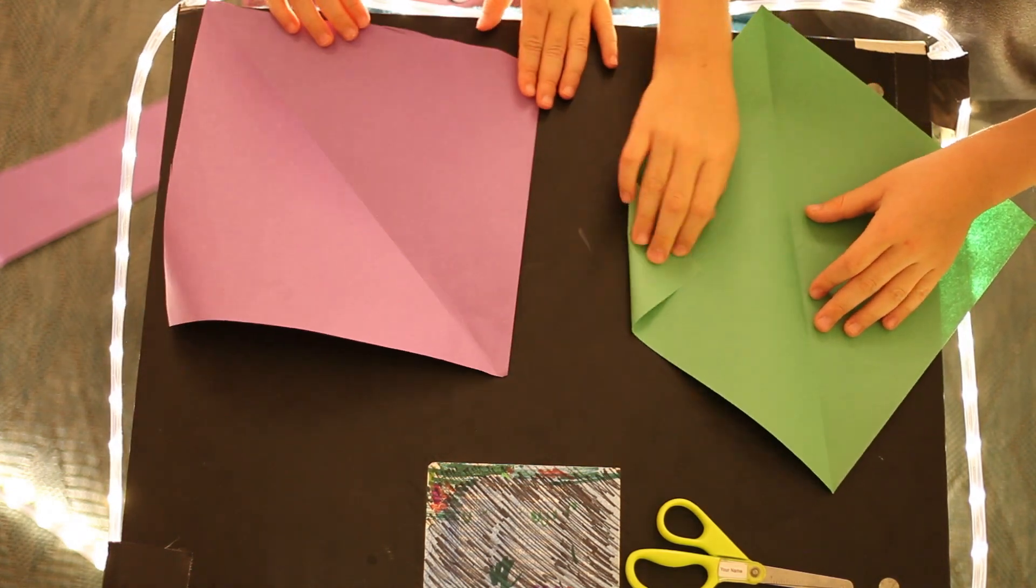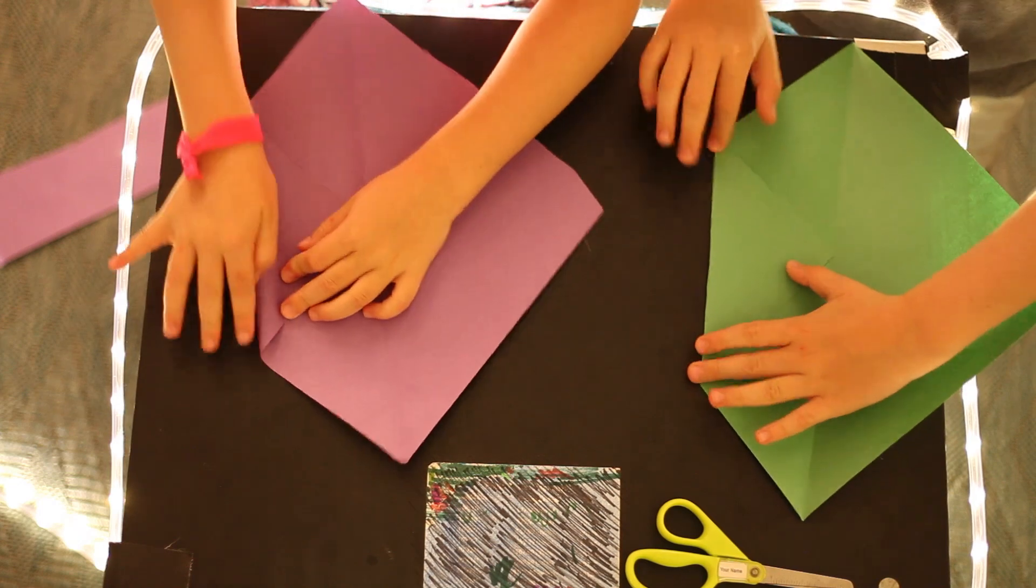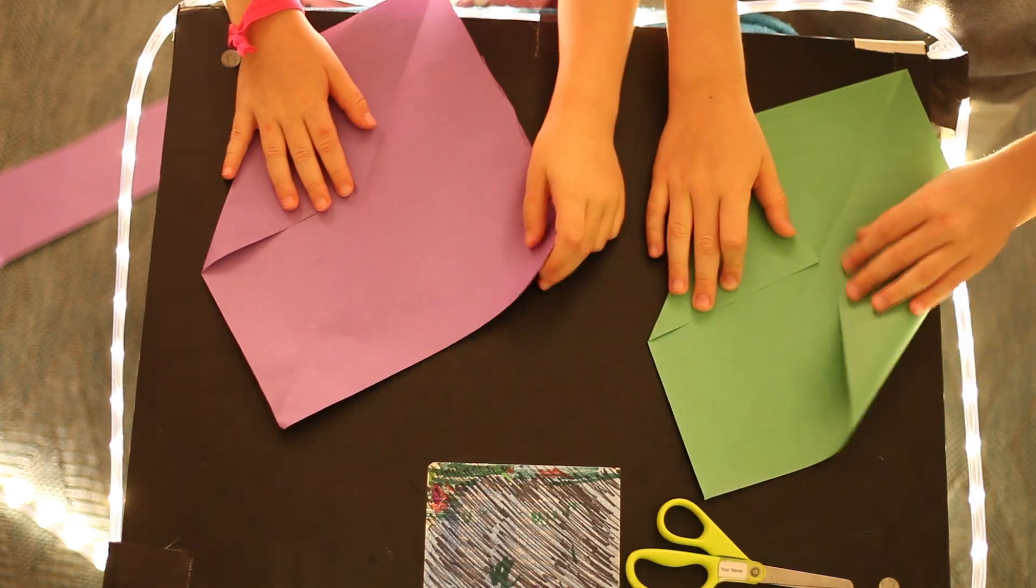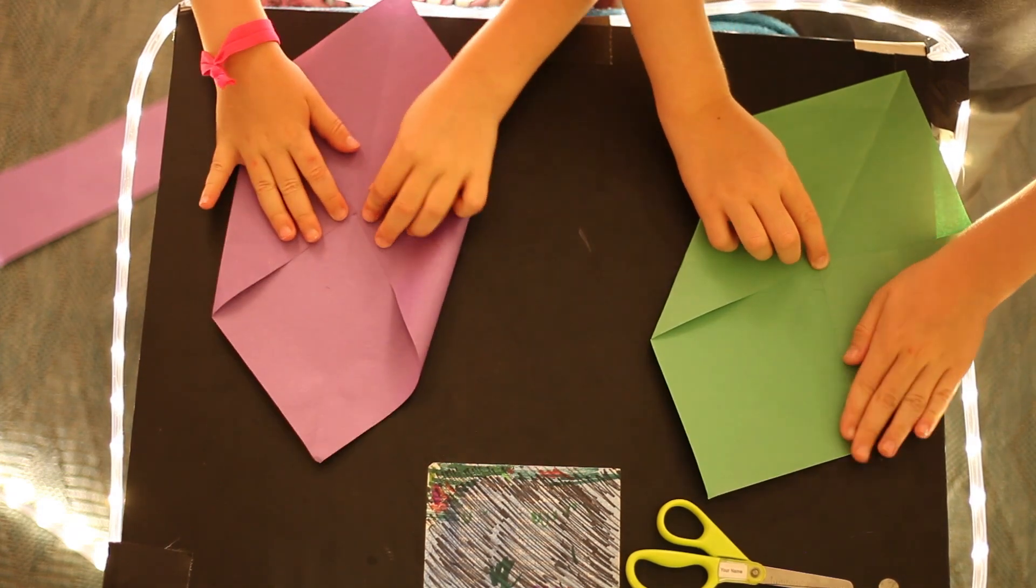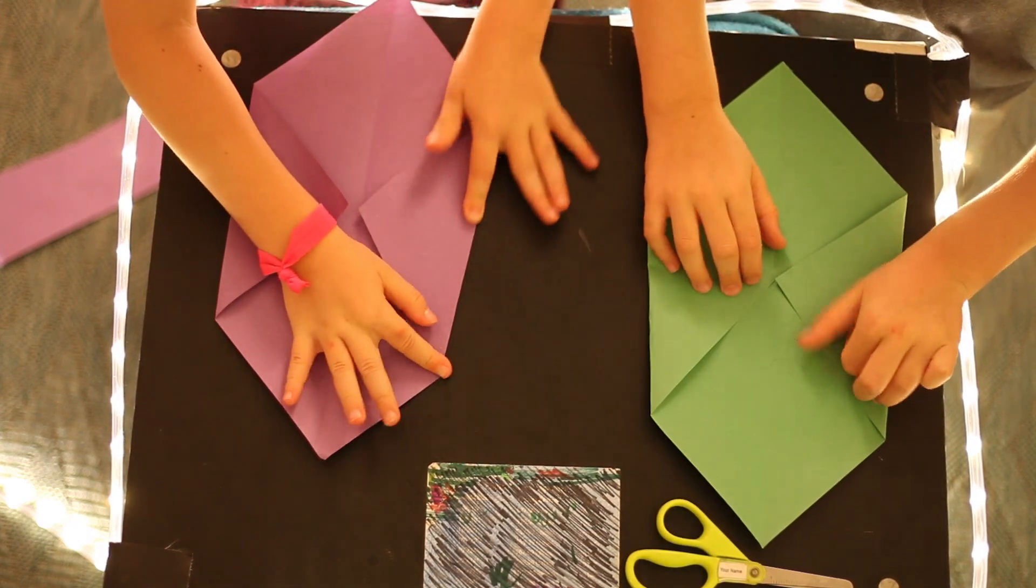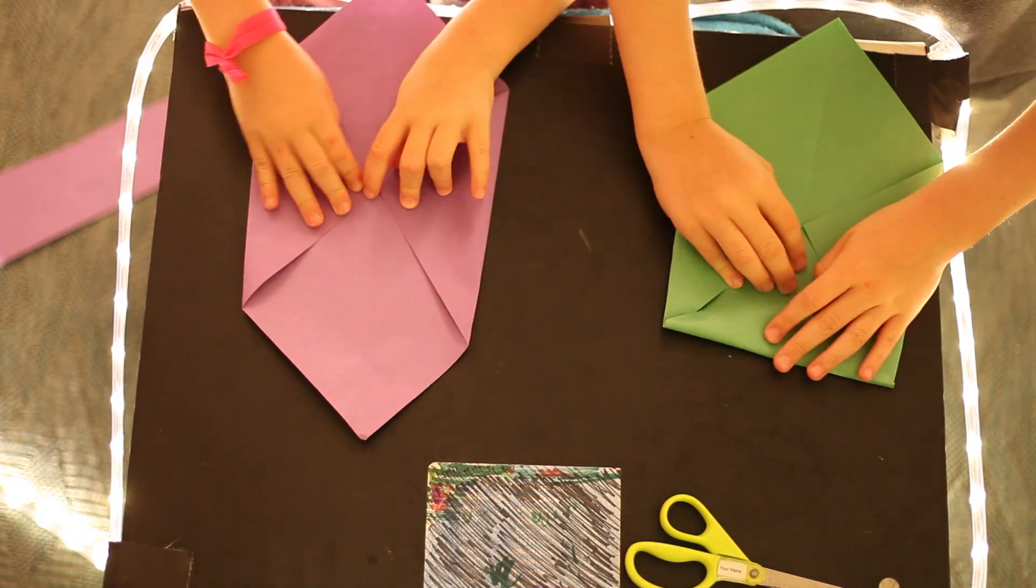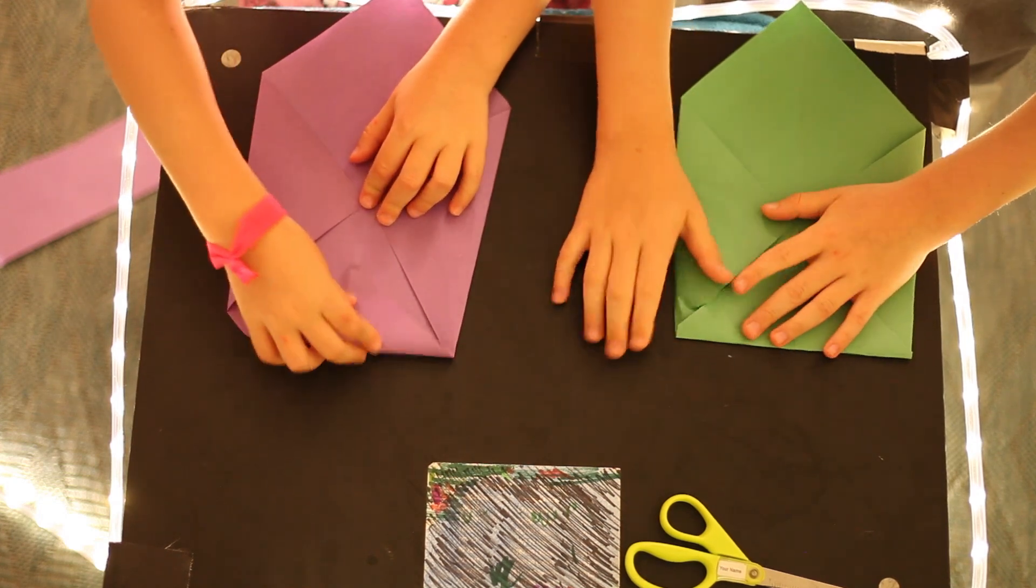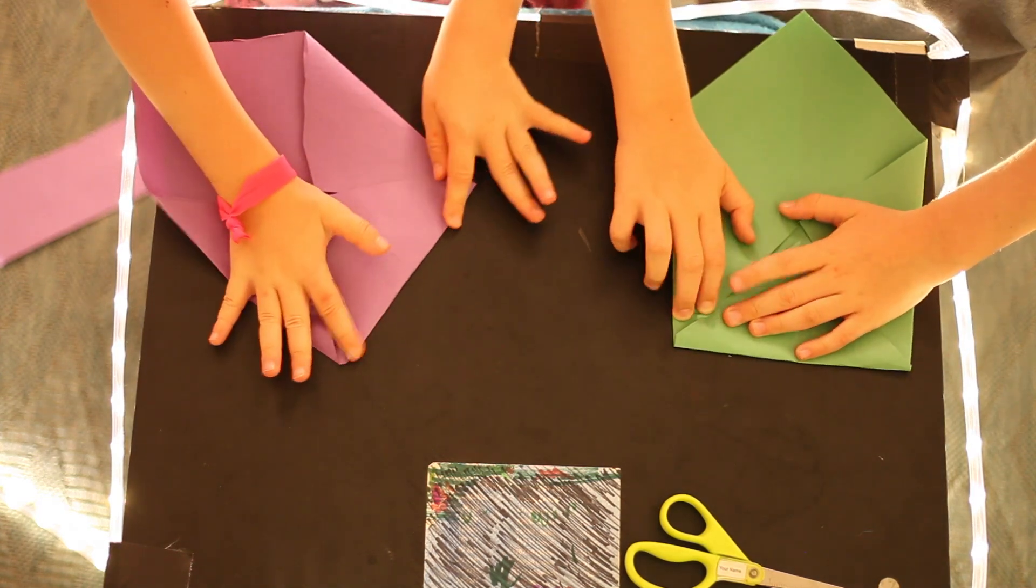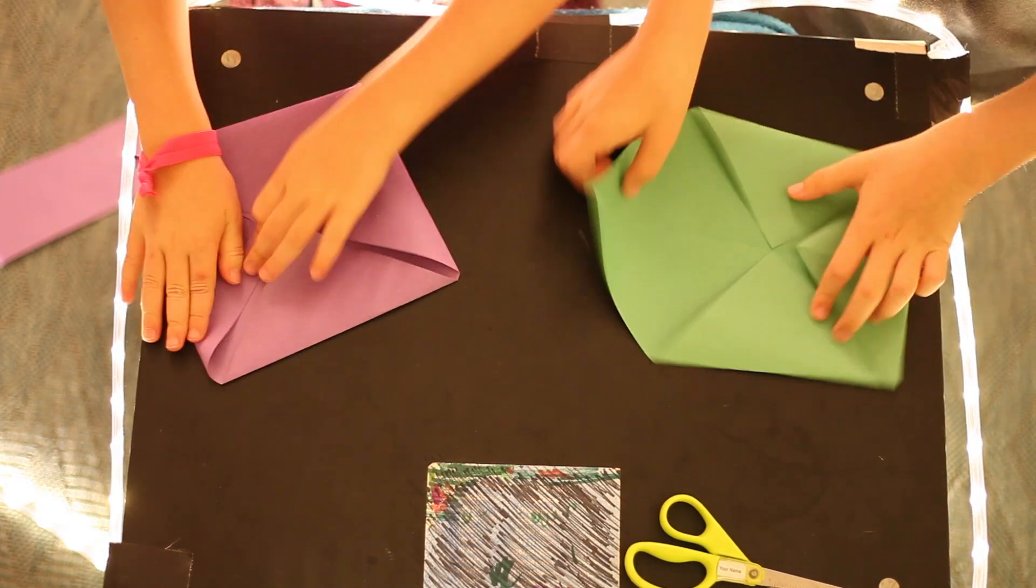Then you would take one of the corners and fold it in so it meets the middle crease. Then, as you might expect, you would do the same for the other two corners. It's okay if it's not perfect and if it's a little more square on one than the other. It won't really matter when we're done with the fortune teller. Just like that.